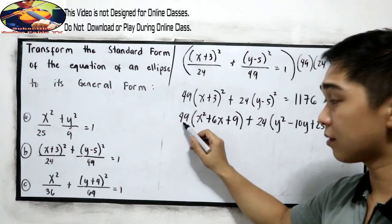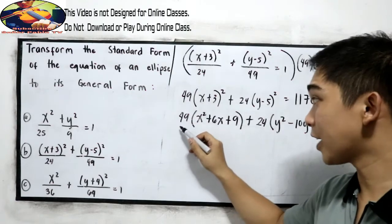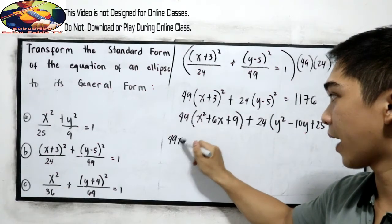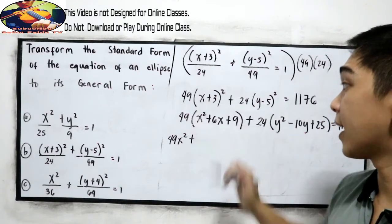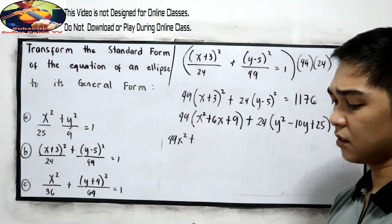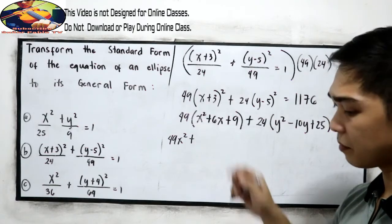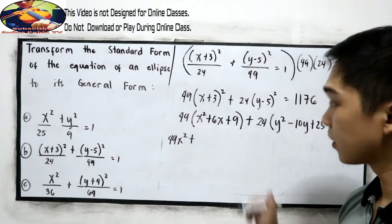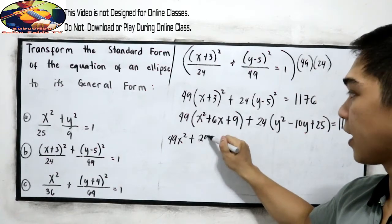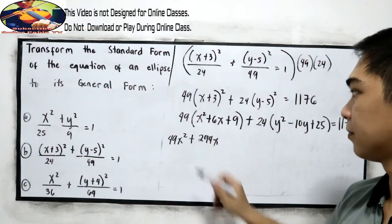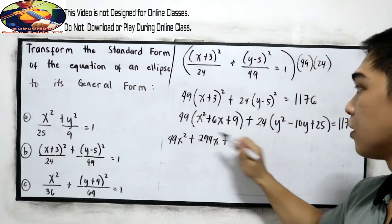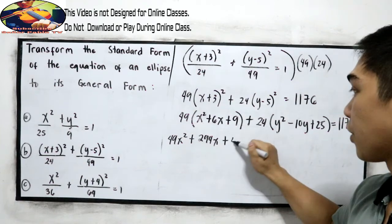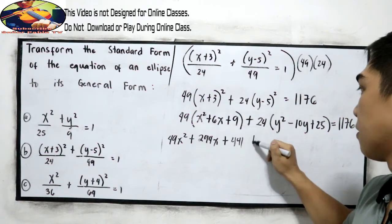Now, we can distribute 49, so 49 times x squared, that is 49x squared. Plus, we have 49 times 6, 294x, then 49 times 9, that is 441.